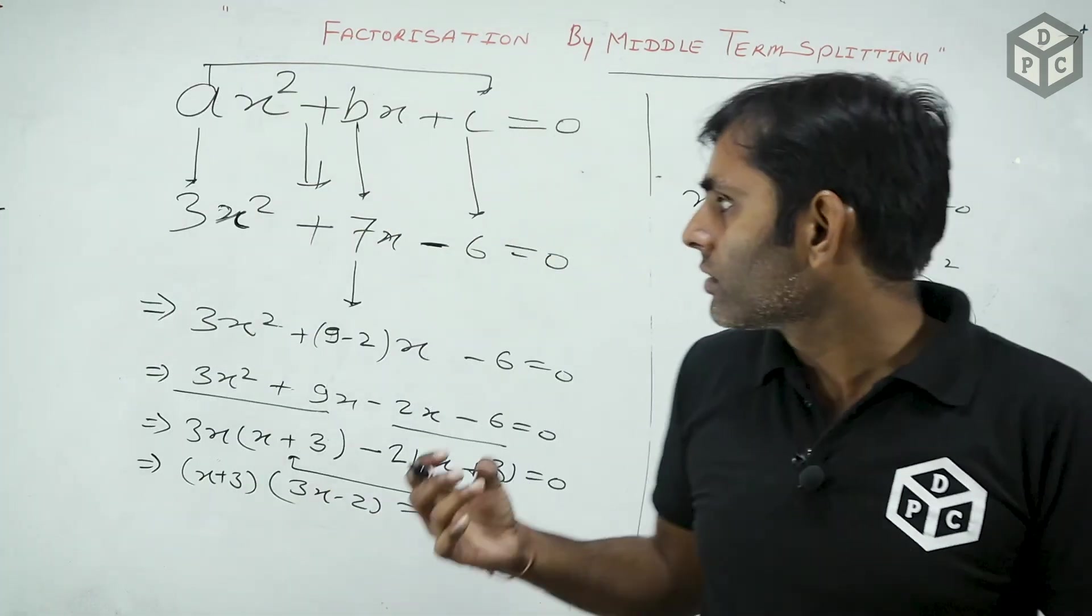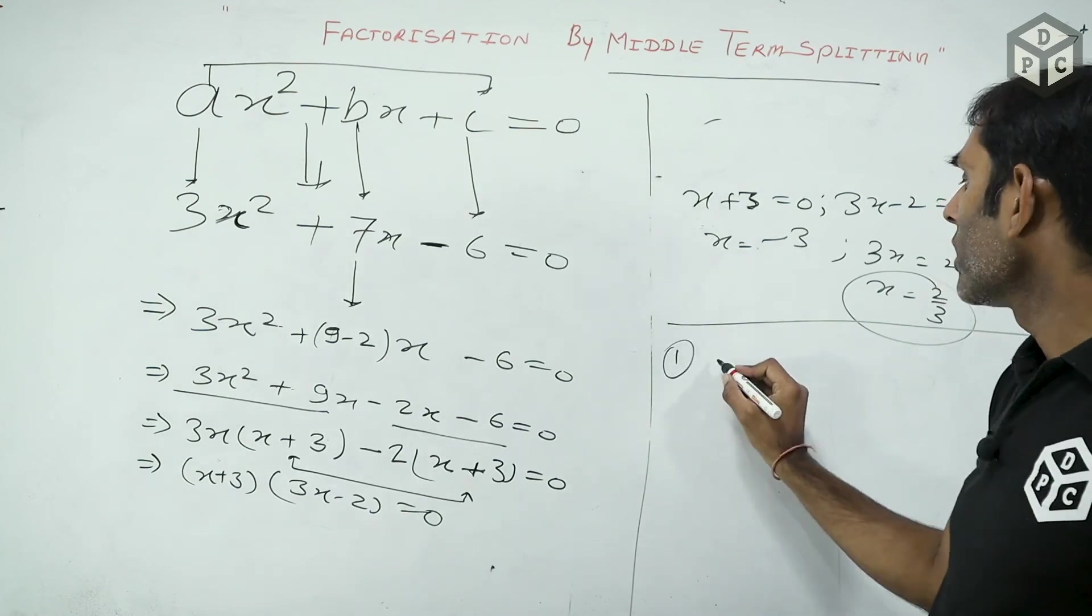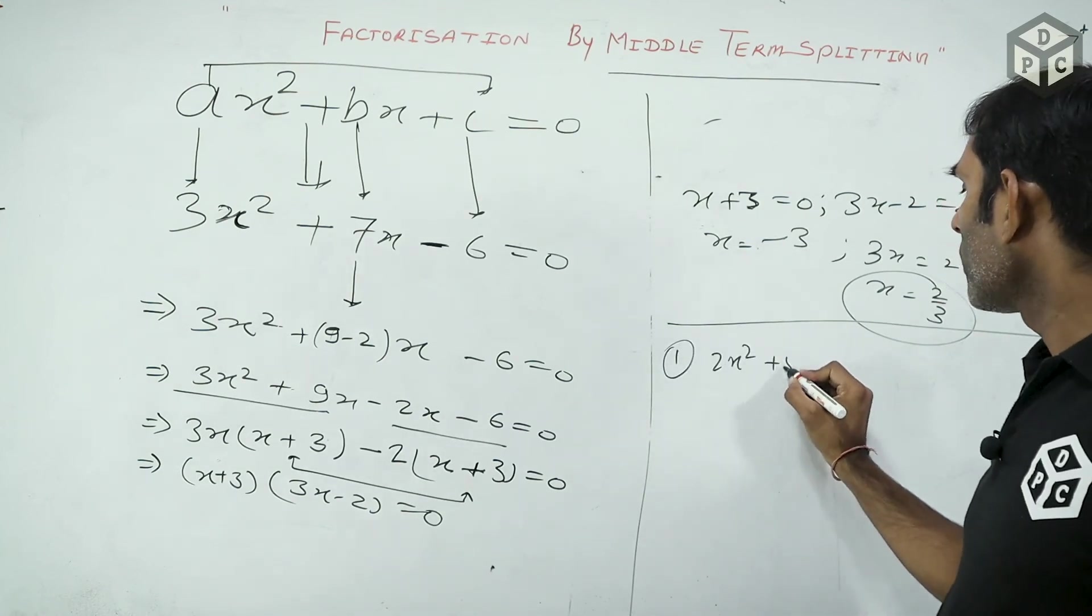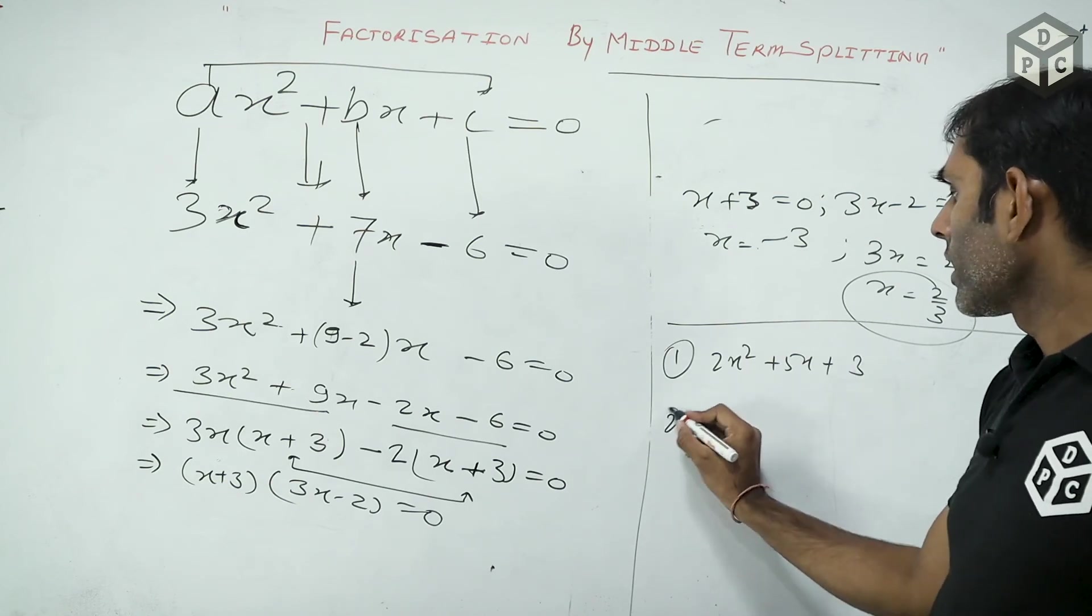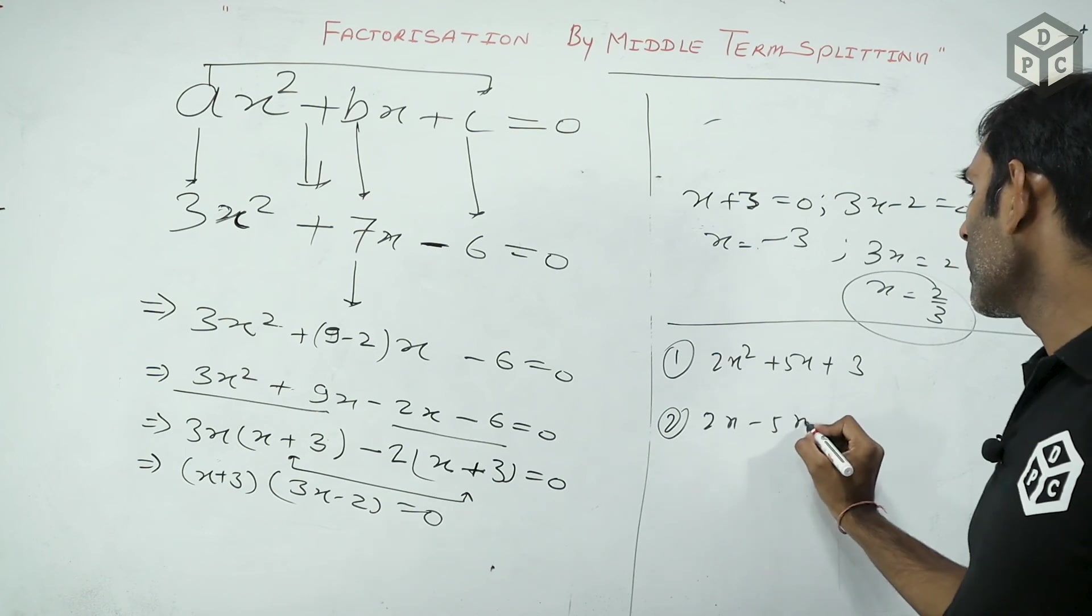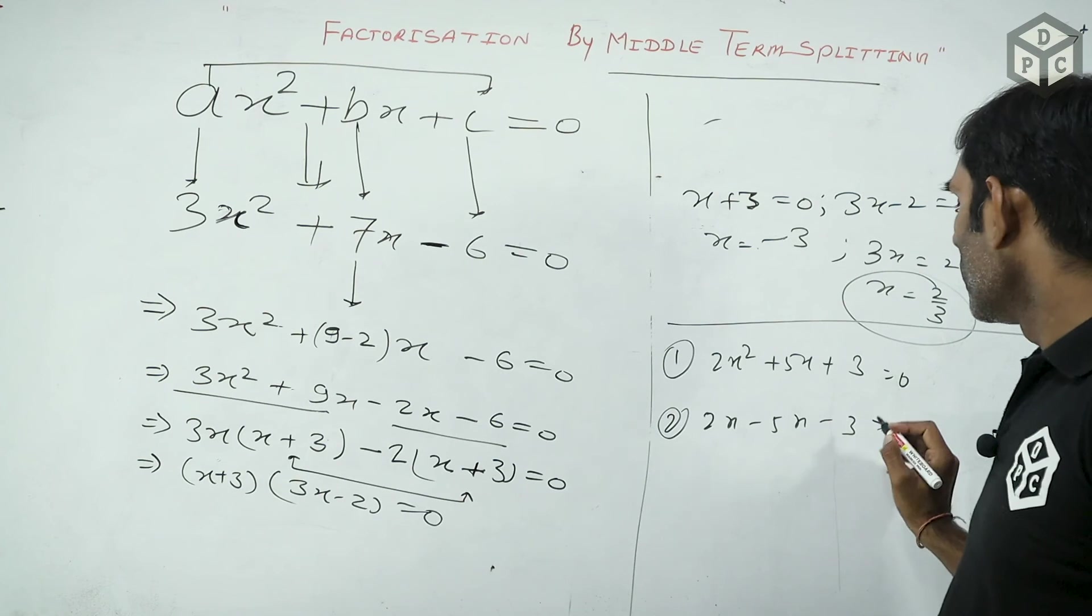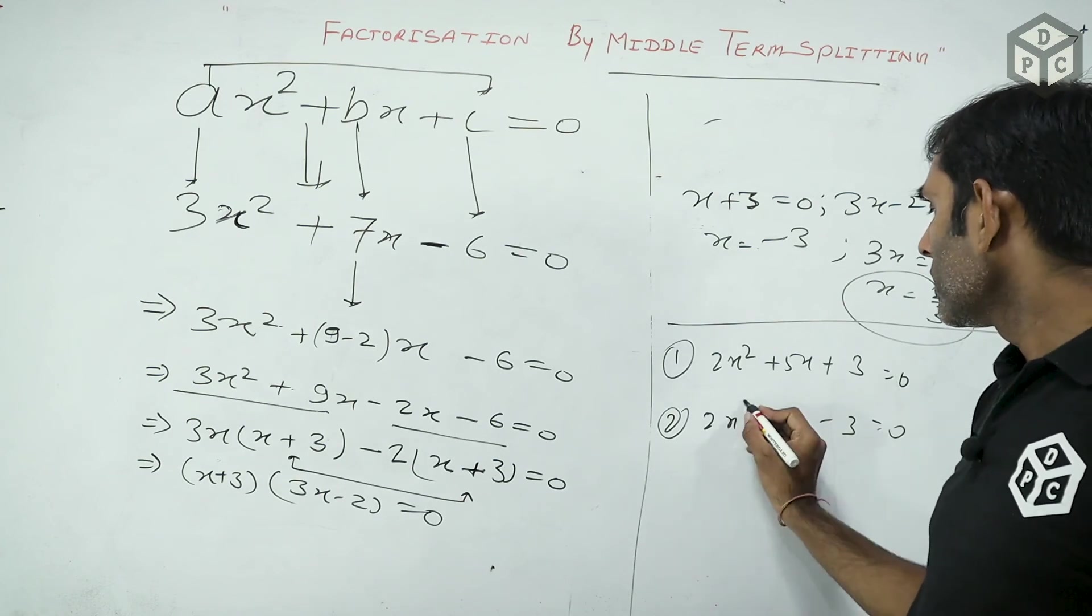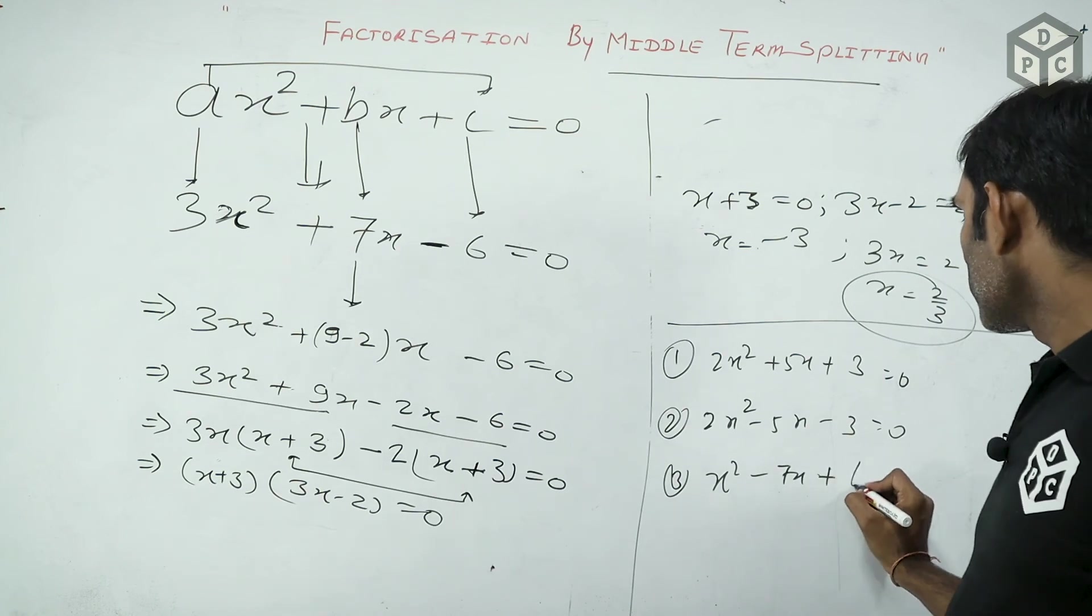How did some factor get done from middle term splitting? So, practice any other questions. No, I will give you a question here. 2x squared plus 5x plus 3. This is the same. I will change the same. 2x minus 5x minus 3. I will change the same. I will give you a question. I will give you a question here. And then you take 1. 1, 3rd. I will give you a question here. x squared plus 7x plus 6.